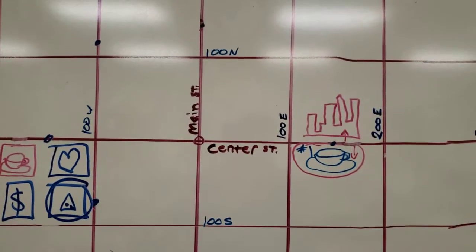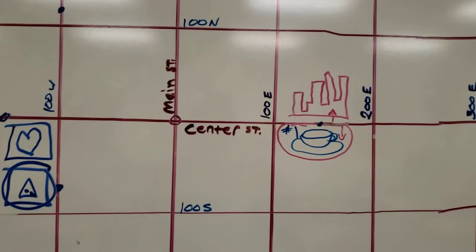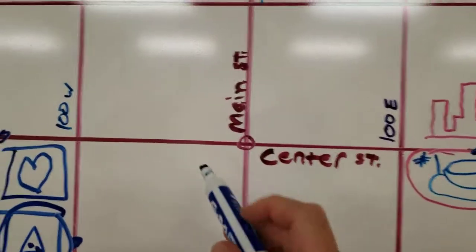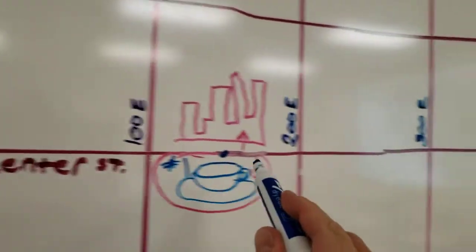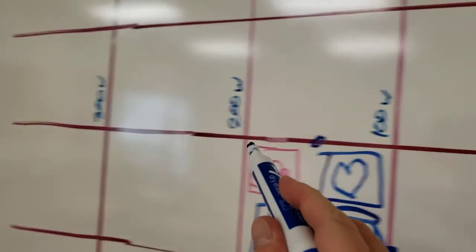So, for number one, where it says 150 East Center Street, I like to look at the second part of that first. So, where it says Center Street. That means we're definitely going to be on Center Street somewhere, right?